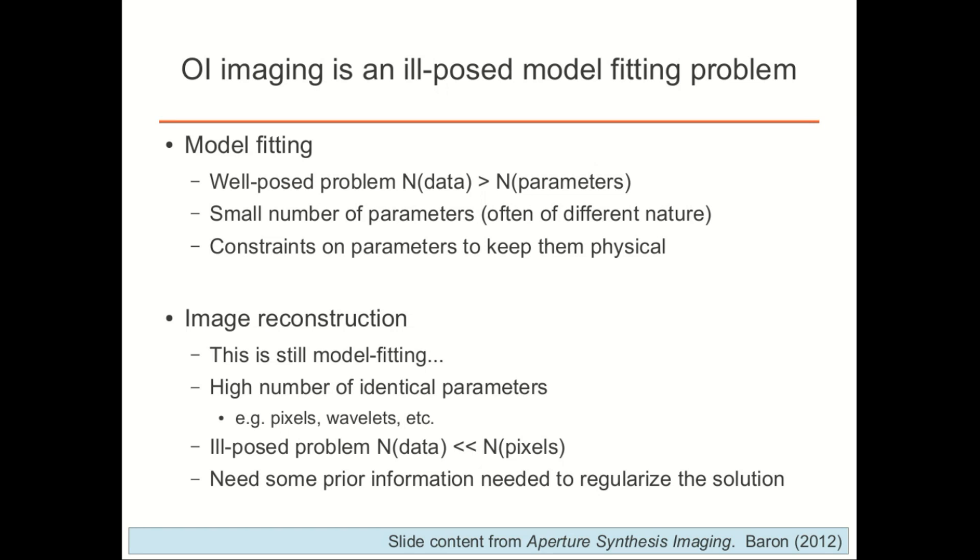However, with image reconstruction, you're still doing model fitting, except for you have a high number of identical parameters. For instance, consider making an image that's 128 pixels on a side. So 128 by 128 is 16,384 identical parameters that you need to fit, basically the flux in each pixel. So it's an incredibly ill-posed model fitting problem in which you have significantly fewer data points than you have number of pixels. Therefore, you have to include some kind of prior information or to regularize the solution.